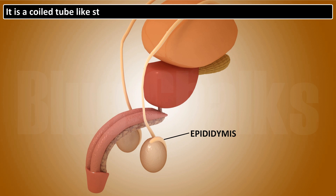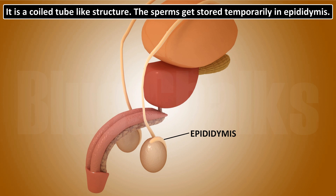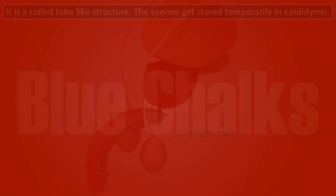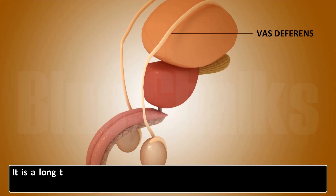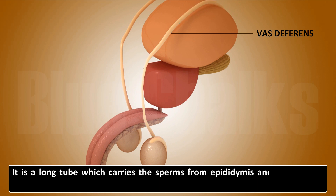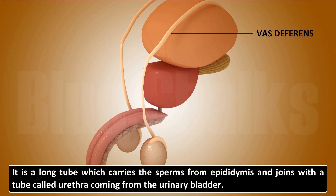The epididymis is a coiled tube-like structure where the sperms are stored temporarily. Epididymis leads to the vas deferens, which is a long tube that carries the sperms from the epididymis and joins with a tube called the urethra coming from the urinary bladder.